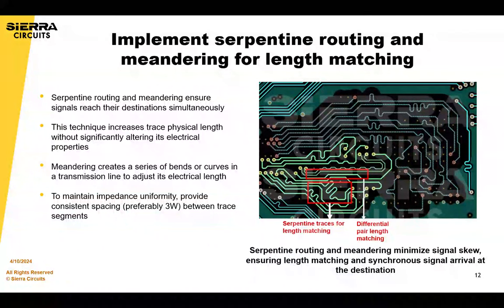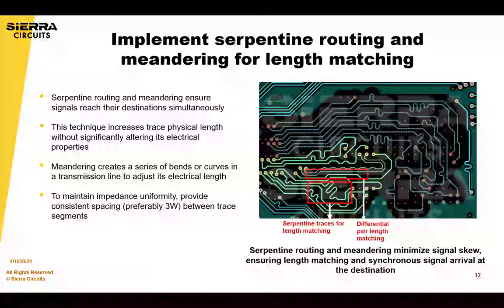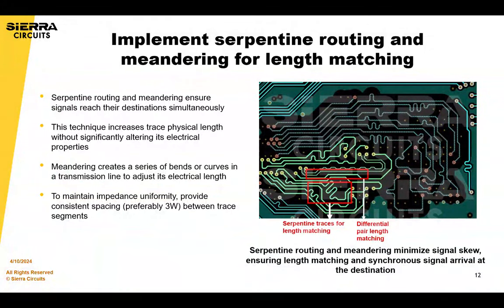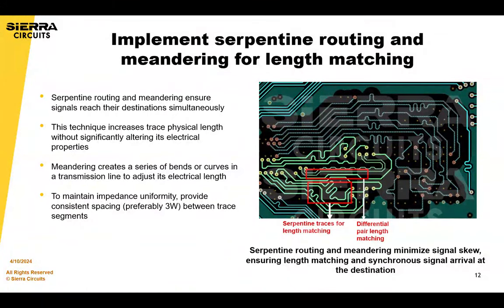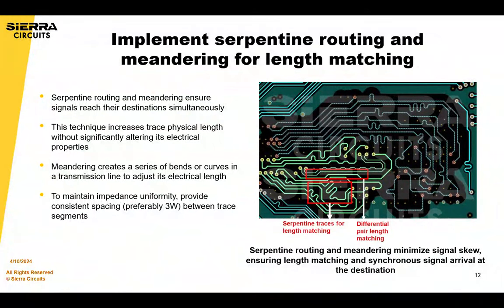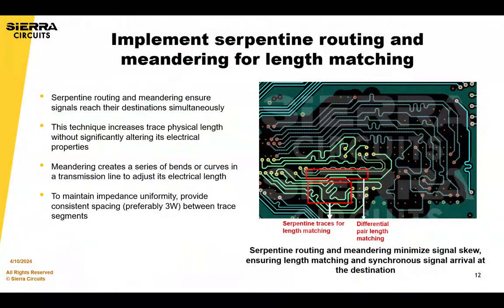One technique is serpentine routing and meandering for length matching. Serpentine routing and meandering techniques ensure signals reach their destination simultaneously. Serpentine routing involves guiding a trace in a back-and-forth snake-like pattern across the PCB, and this technique increases the physical length of the trace without significantly altering its electrical properties. Meandering creates a series of bends in a transmission line to adjust its electrical length, helping fine-tune the signal's timing and phase characteristics.